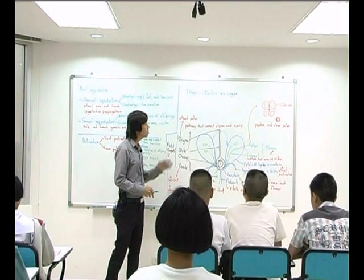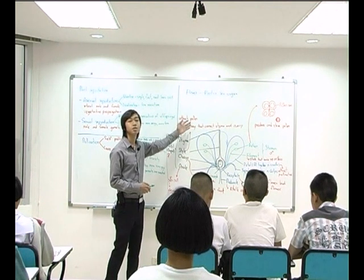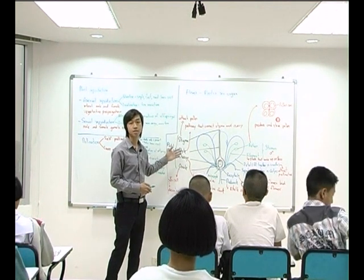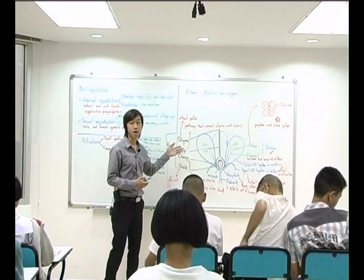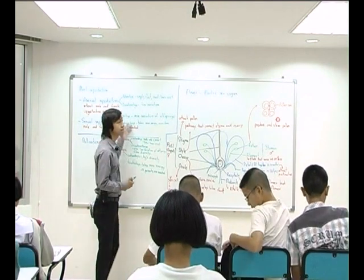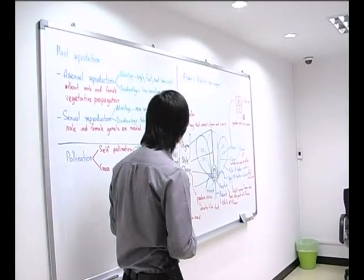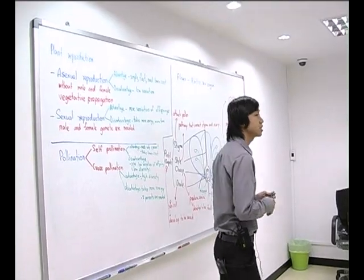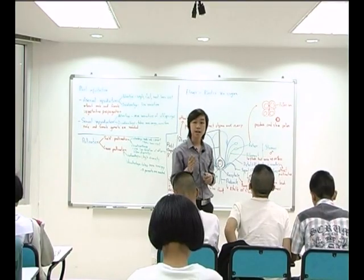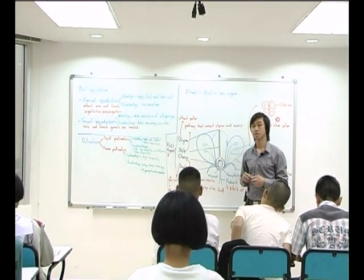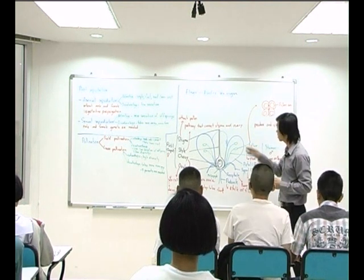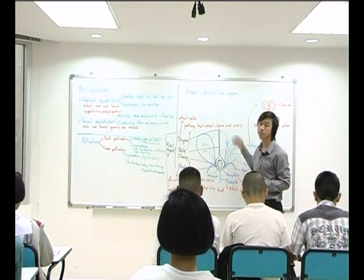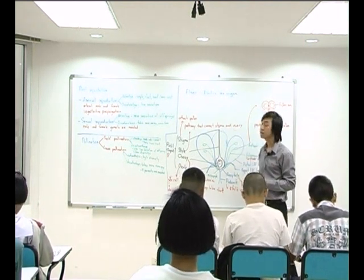Today I am going to talk about plant reproduction. In the plant there are sexual and asexual reproduction. For sexual reproduction, the plant needs flowers to reproduce. In the structure of the flower, they include four major parts.